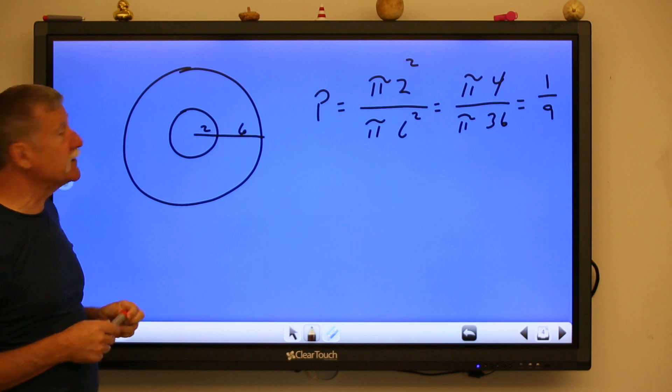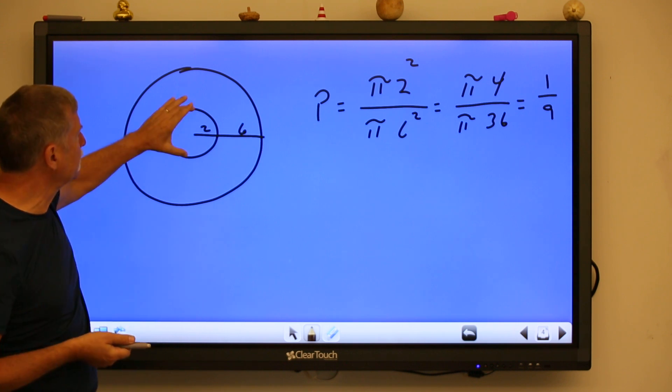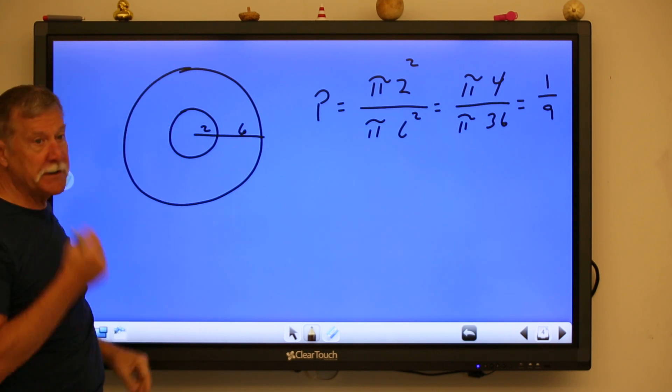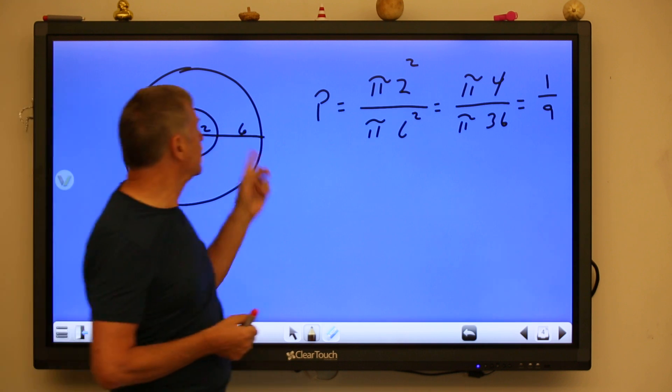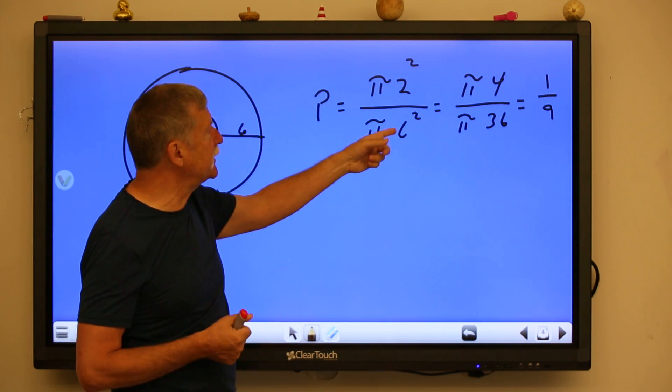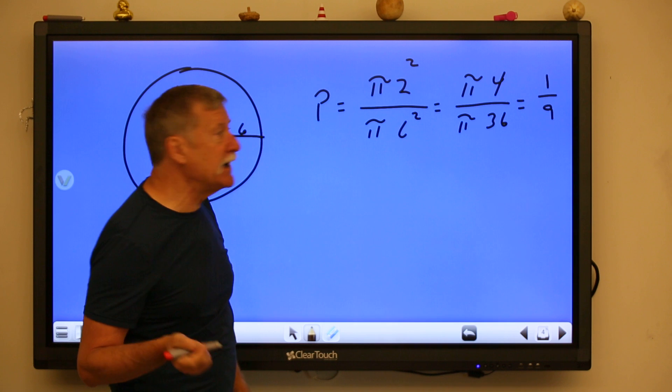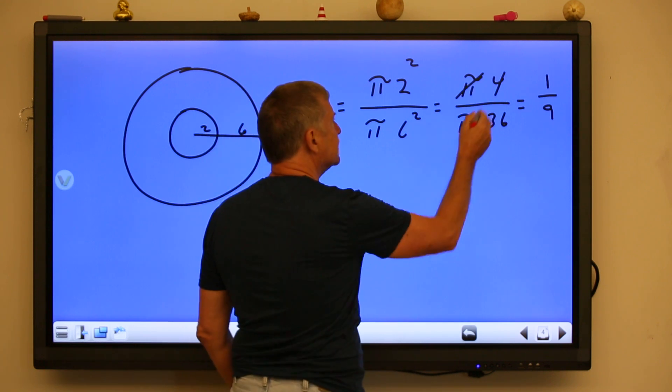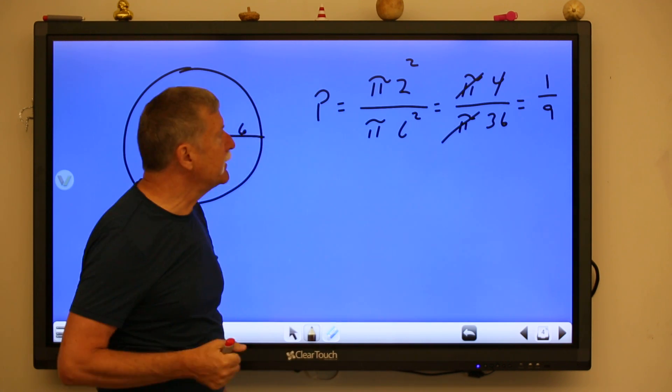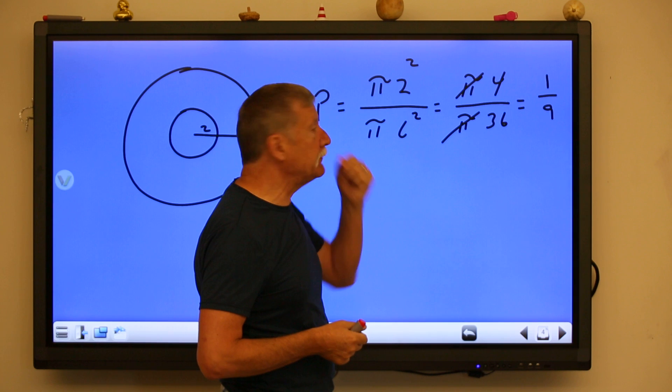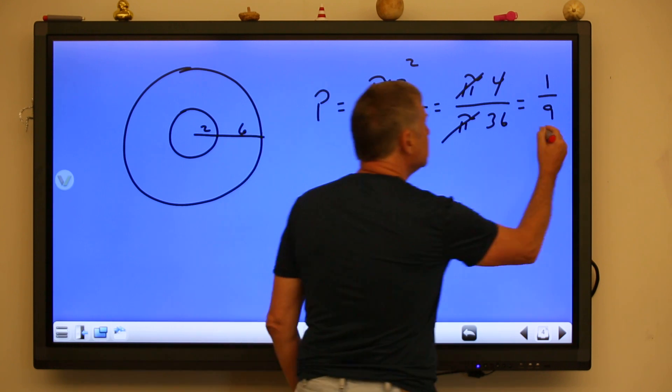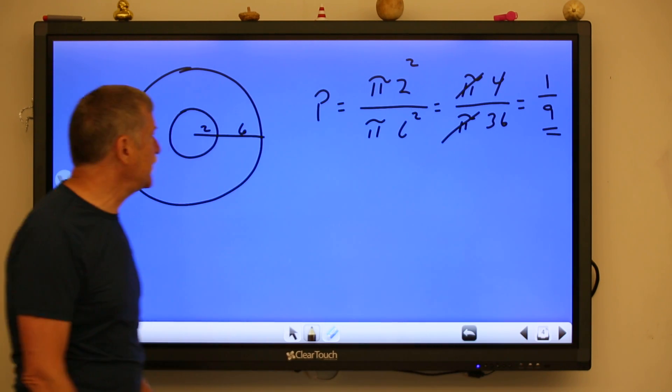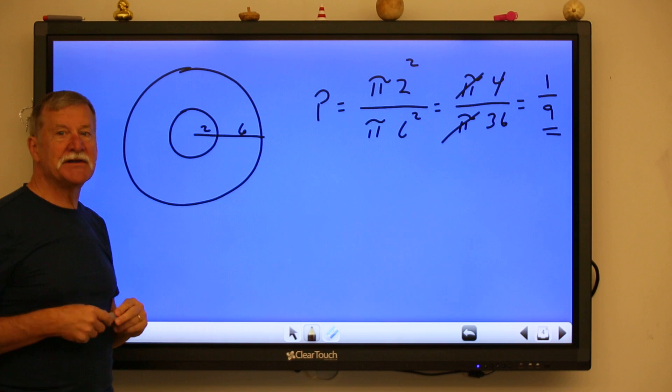So in this case, we've got pi r squared compared to pi r squared. The little pi r squared compared to the big pi r squared. And 2 radius compared to 6 radius. And the neat thing about that is that the pi's cancel out. So that we just simply have a fraction that we put in simplest terms. And we see that you've got a 1 out of 9 chance of perhaps hitting that center circle.